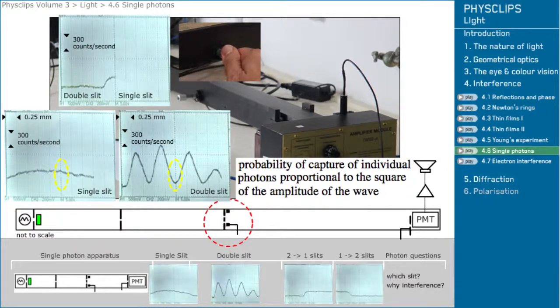Yes, when we close one slit, only half as many photons get past the central barrier. But the capture rate increases at this detector position because there's no longer destructive interference.